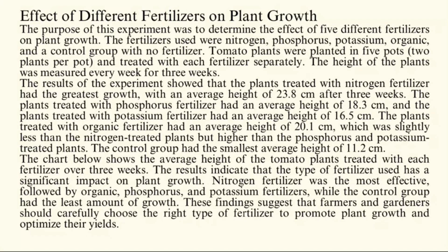The results showed that plants treated with nitrogen fertilizer had the greatest growth, with an average height of 23.8 centimeters after three weeks. Plants treated with phosphorus fertilizer had an average height of 18.3 centimeters, and potassium-treated plants had an average height of 16.5 centimeters. Plants treated with organic fertilizer had an average height of 20.1 centimeters, slightly less than nitrogen but higher than phosphorus and potassium.